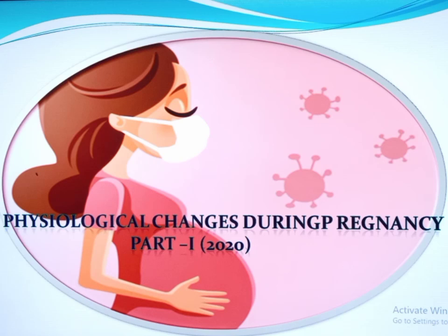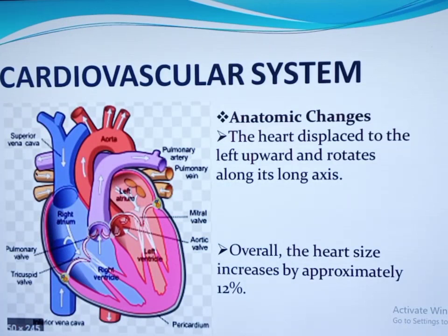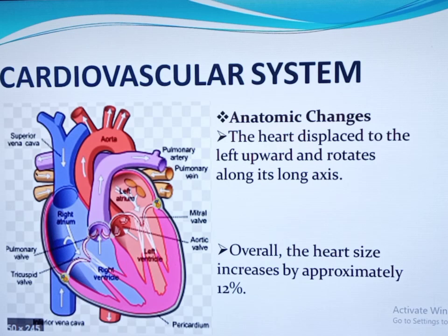For this part we will see the changes in the cardiovascular system, hematologic changes, and metabolic changes. So let us start from the cardiovascular system. In order to maximize oxygen delivery to both mother and the fetus, some of the most profound physiological changes take place in the cardiovascular system. The heart is displaced to the left, upward, and rotated along its long axis. This is because of the elevation of the diaphragm and the change in the architecture of the rib cage.